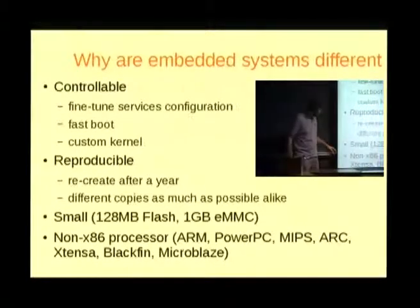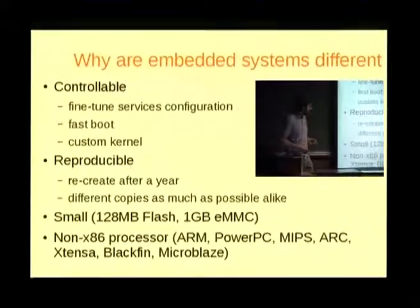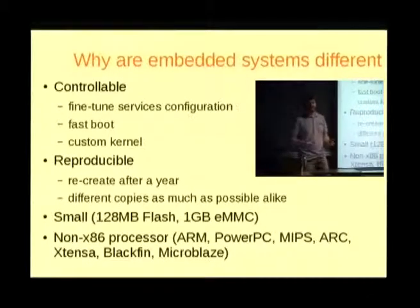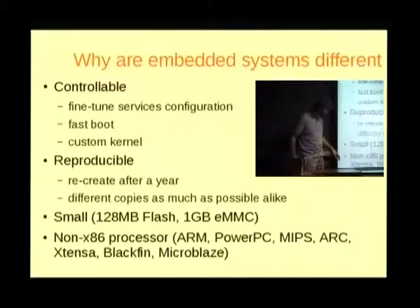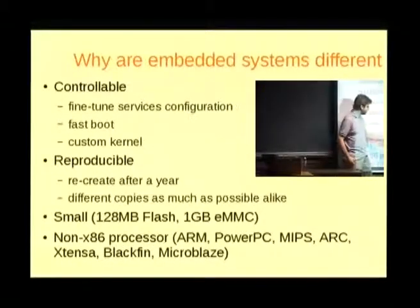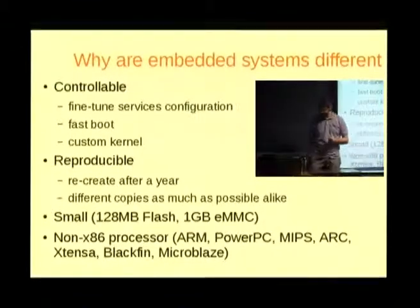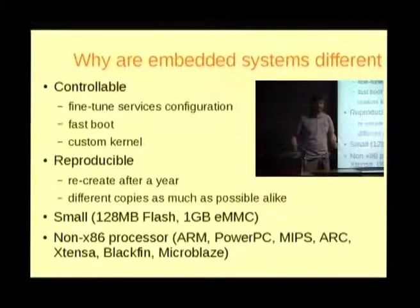Embedded systems are typically also small. In a vacuum cleaner robot, for example, we're not going to put in a gigabyte of flash — maybe 120 megabytes. Somewhat bigger systems have maybe a gigabyte of eMMC, but every additional gigabyte adds to the cost, and embedded systems are usually very cost-driven. Also very important: you're often using non-desktop instruction set architectures. ARM is the most common, but you also have many systems using PowerPC, MIPS, and even more exotic processors like Arc, Xtensa, Blackfin, and Microblaze.